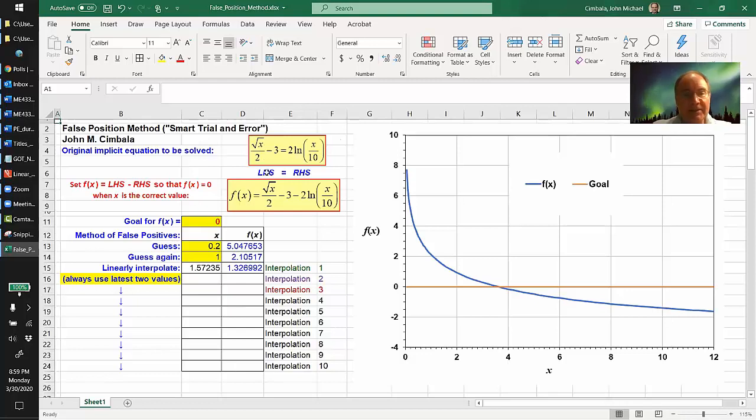This equation has the form left-hand side equal right-hand side. So I define f of X as the left-hand side minus the right-hand side such that when the left-hand side equals the right-hand side, X is correct and therefore f of X is zero. So that's my goal. I set my goal for f of X. I also plot f of X in blue and the goal in red for illustrative purposes.